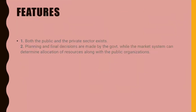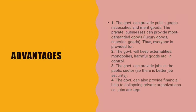Features include both the public and private sectors existing. Planning and final decisions are made by the government, while the market system determines resource allocation along with public organizations. Advantages: the government can provide public goods, necessities, and merit goods; private businesses provide most-demanded goods like luxury or superior goods, so everyone is provided for. The government keeps externalities, monopolies, harmful and demerit goods under control, provides jobs in the public sector, and offers financial help to collapsing private organizations to preserve jobs.